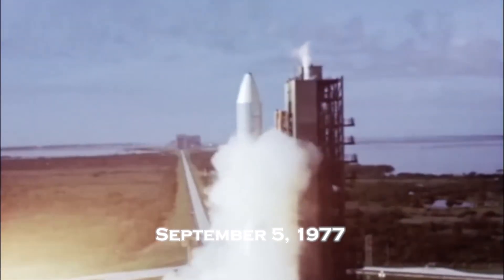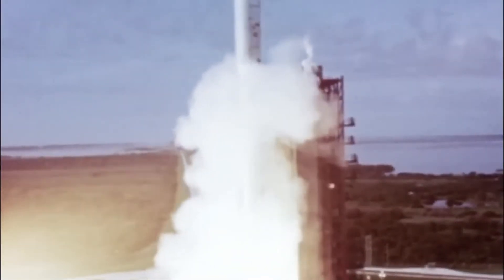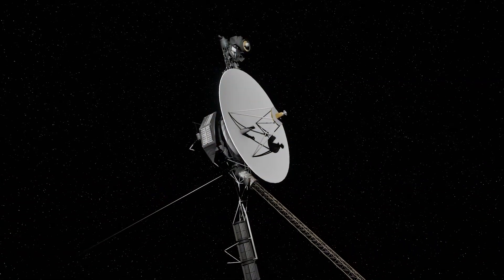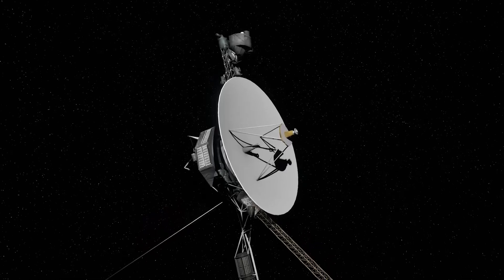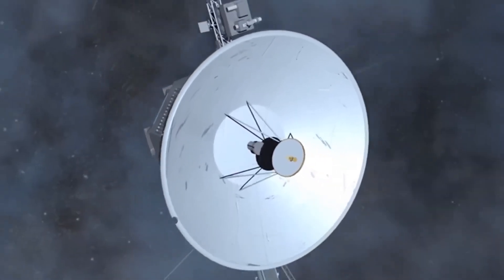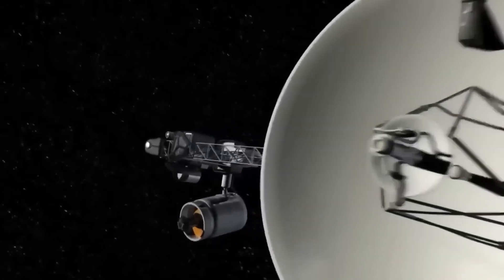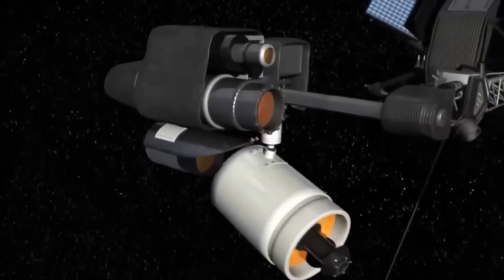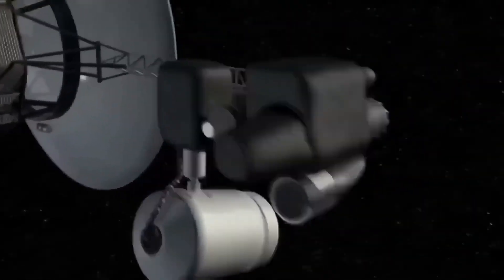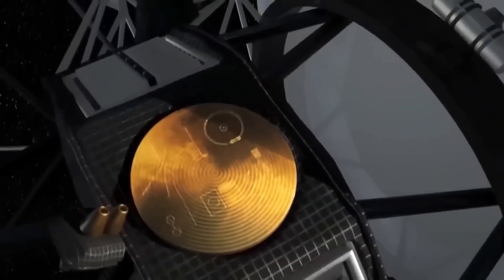On September 5th, 1977, NASA launched Voyager 1, a mission that would become one of humanity's most ambitious explorations. Paired with Voyager 2, these spacecraft set out to study the outer planets of our solar system. Little did we know that they would continue their journey into the unknown, defying every expectation.